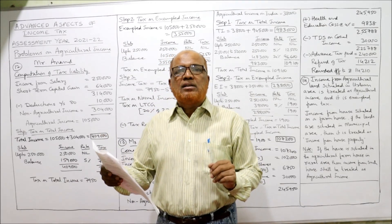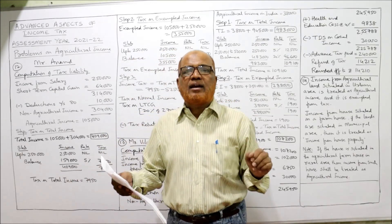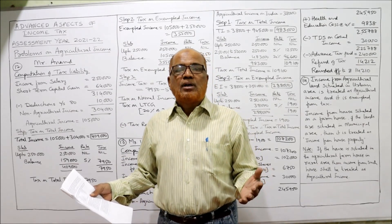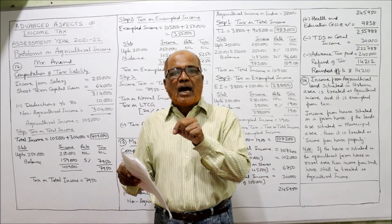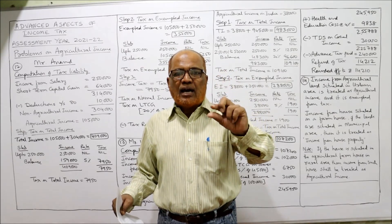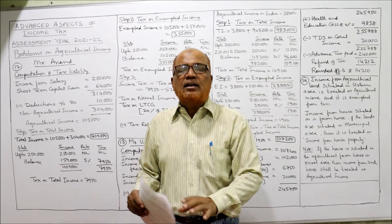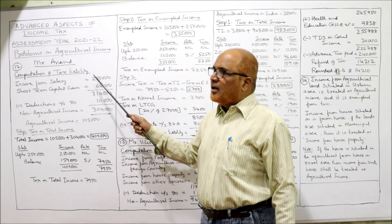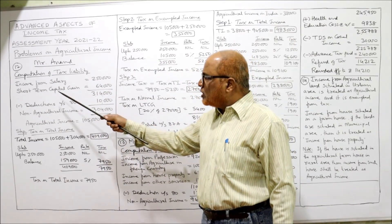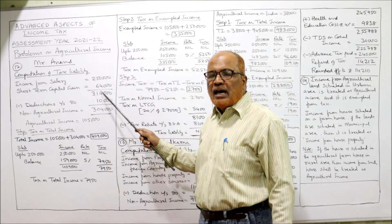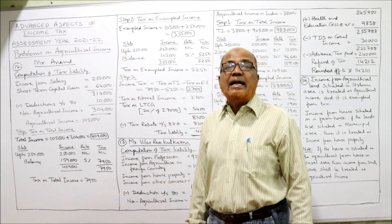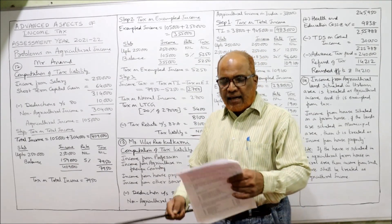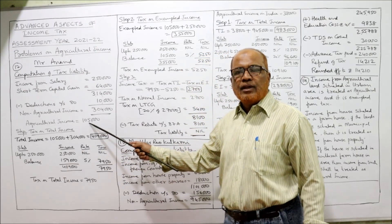Winning from lottery is a casual income on which there is a flat rate of 30%. Deduction under Section 80 will be allowed from normal incomes. The normal incomes are income from salary and short-term capital gain. So we add up income from salary and short-term capital gain, then deduct deductions under Section 80. In Mr. Anand's computation: income from salary is 2,50,000, short-term capital gain is 64,000, total 3,14,000. From that, deduct Section 80 deductions of 10,000, giving non-agricultural income of 3,04,000.